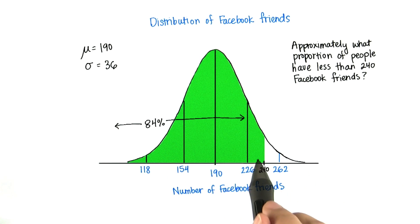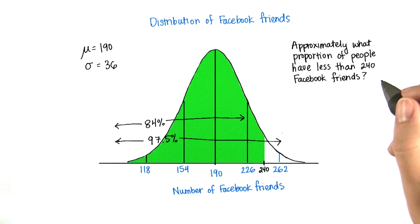If we add this section, which is 13.5%, then we know that 97.5% are between negative infinity and 262.